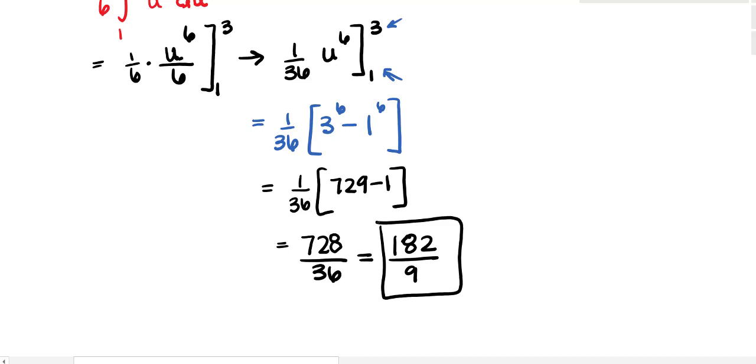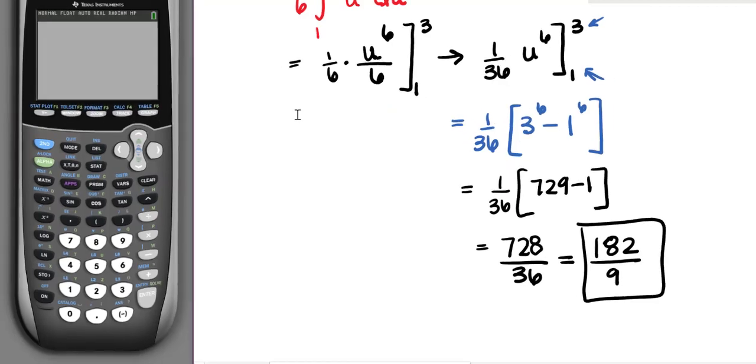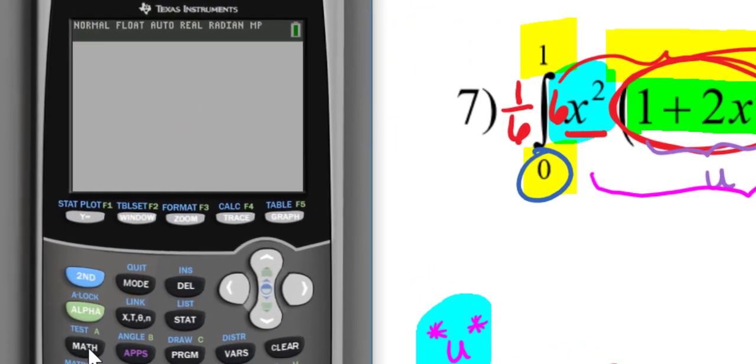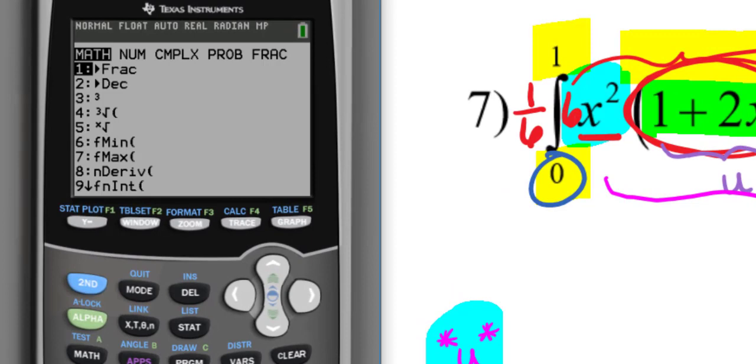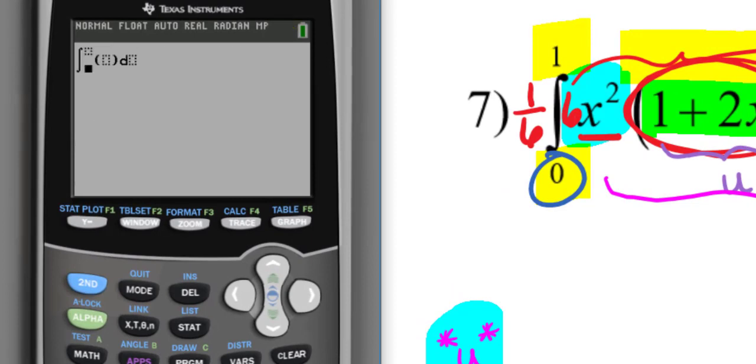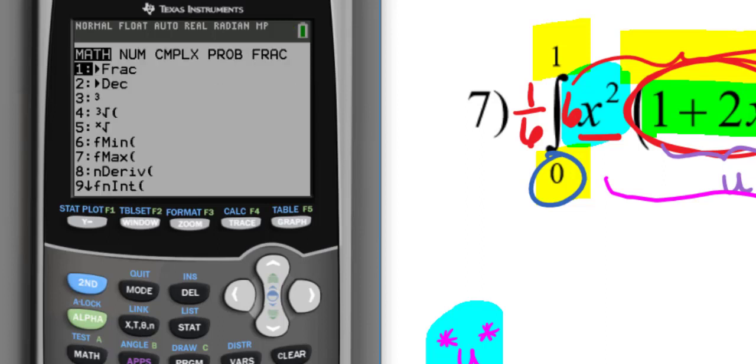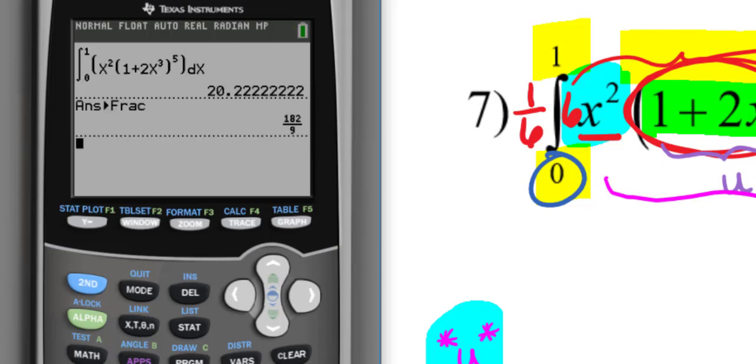And certainly we should check this using our graphing calculators, and we're going to substitute in the very original. So we're going to say math 9 or function integrate from 0 to 1. I'm going to type in the very original: x squared times the quantity 1 plus 2x cubed to the fifth with respect to x. And if I hit math enter enter to see what fraction that becomes, it is 182 over 9, which is exactly what we got.